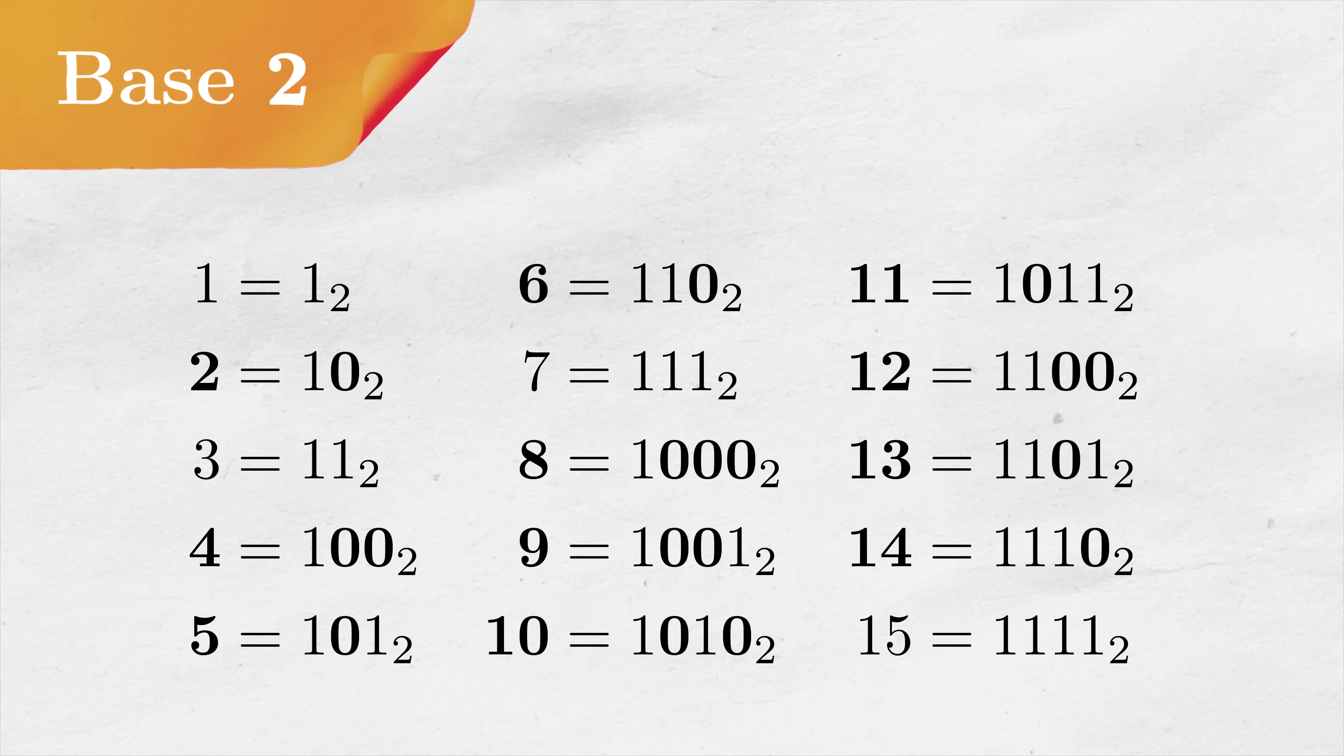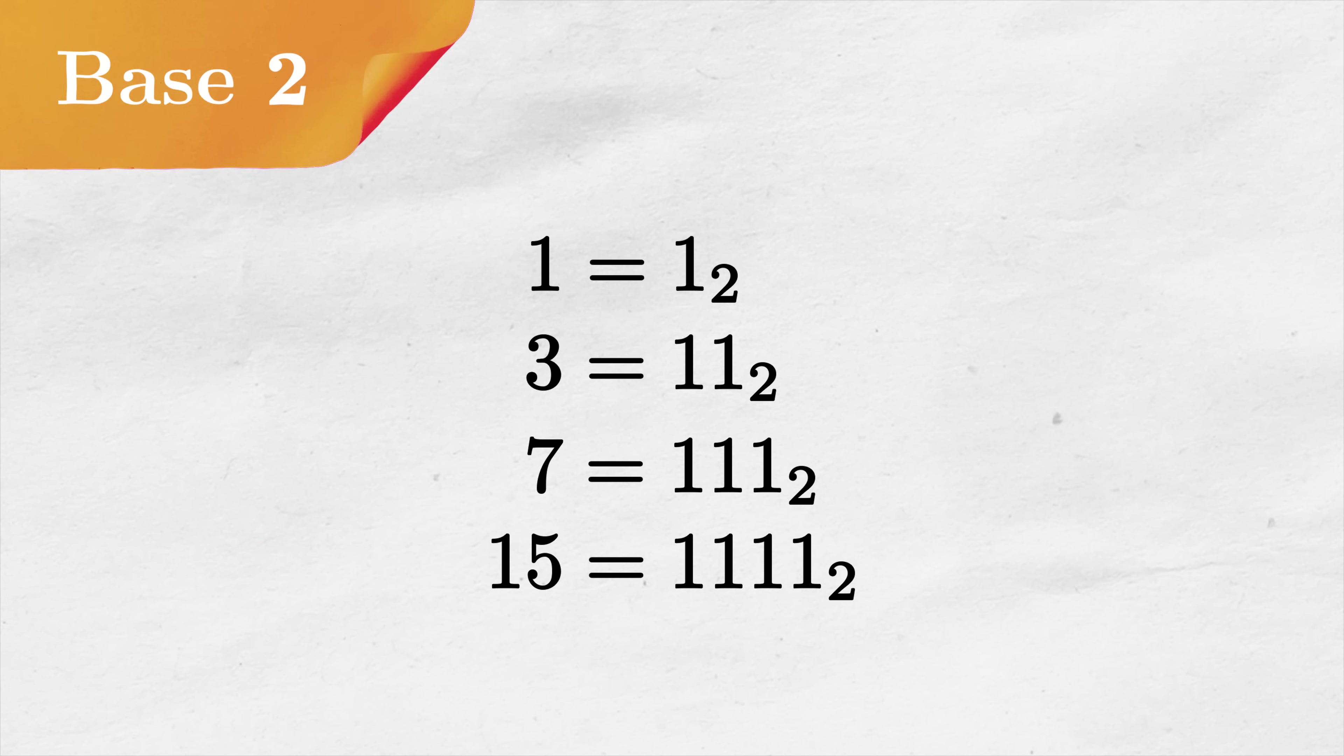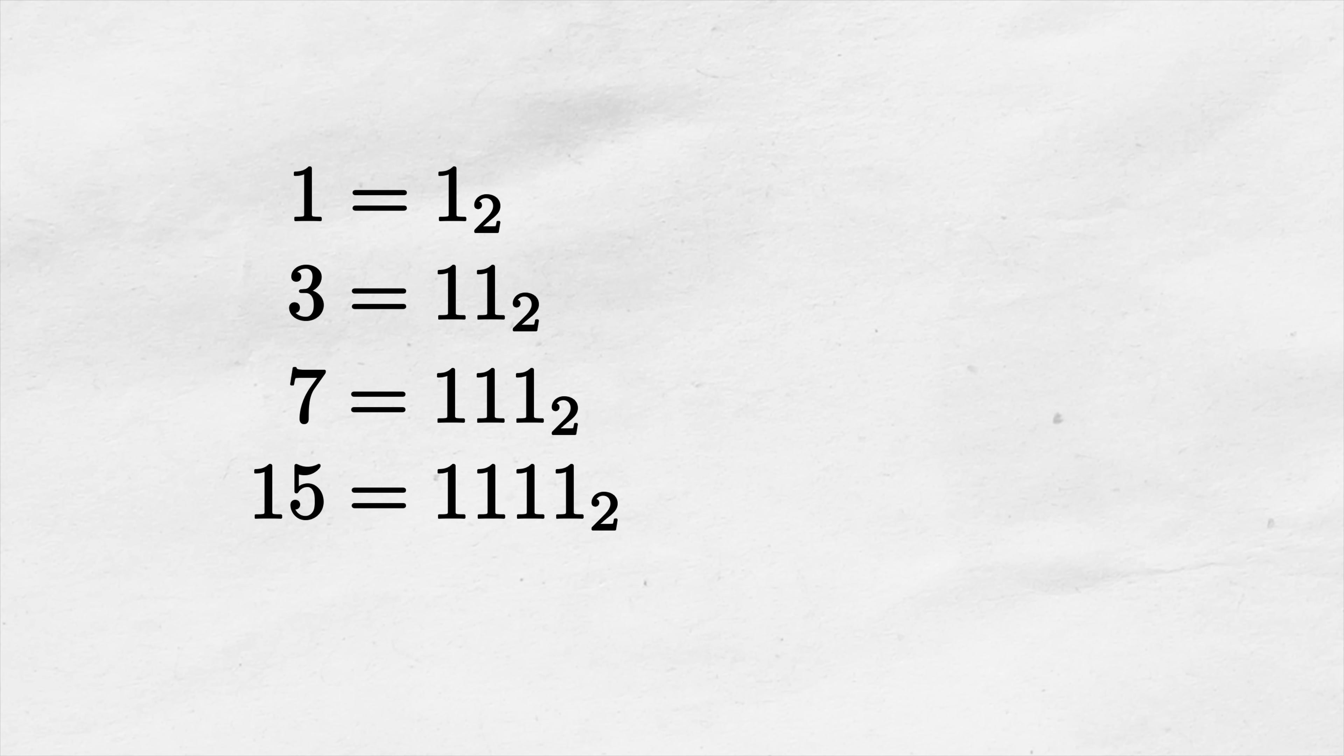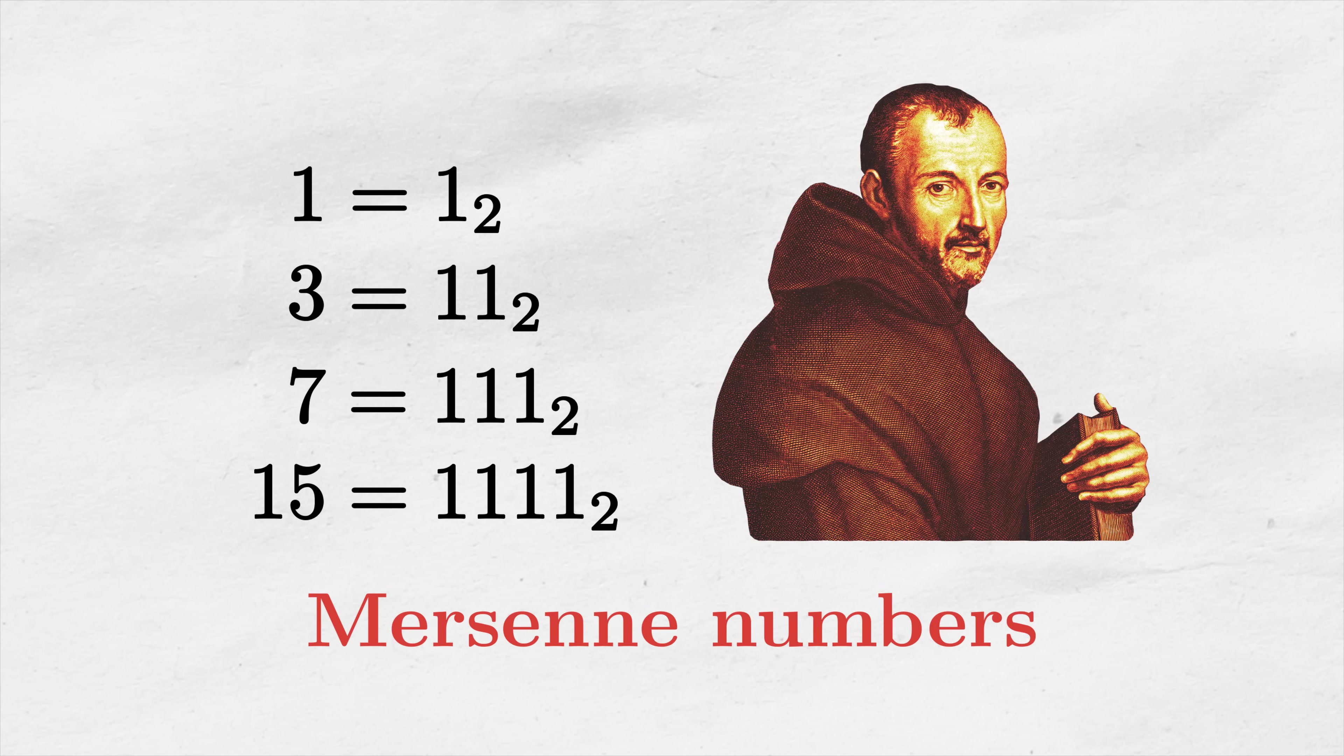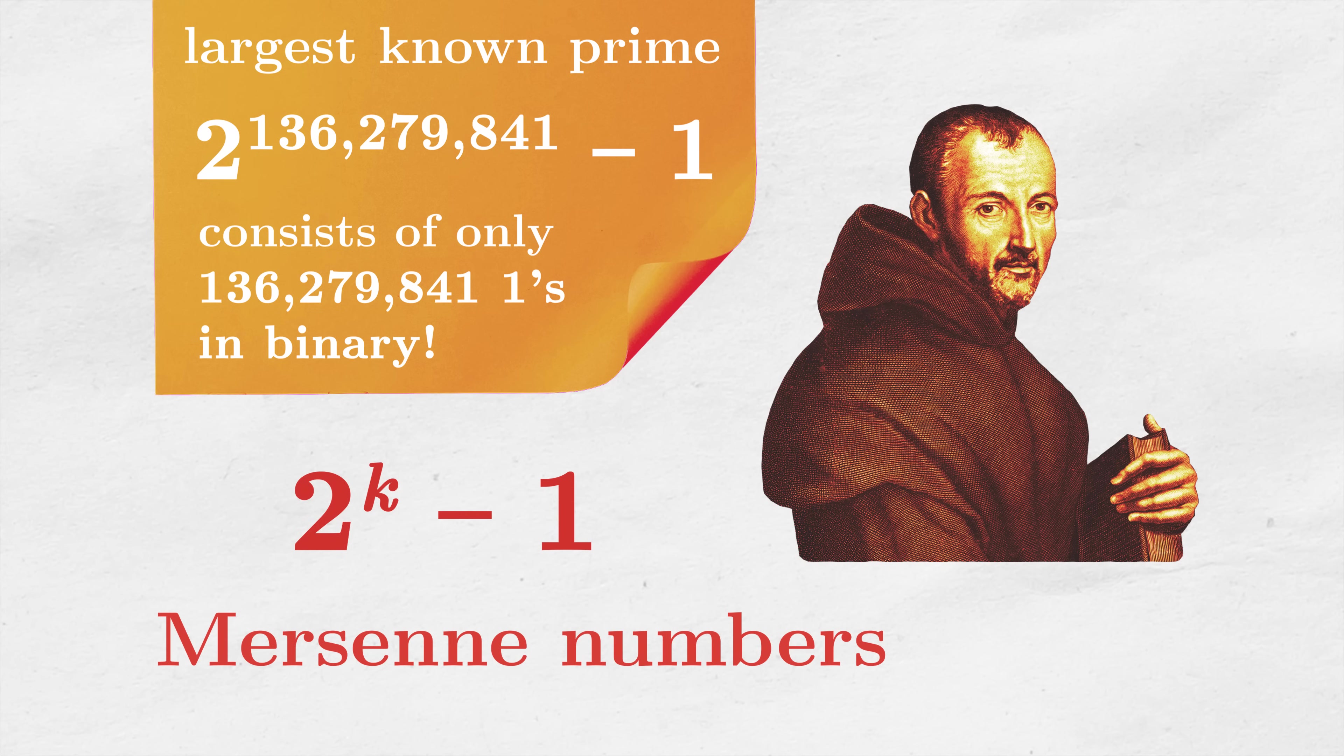The second observation is about the base 2. If you look at binary representations of next numbers, it's fairly easy to notice that almost all of them contain some zero. In fact, the only numbers that do not contain any zero are the ones that consist of ones only. These are very special numbers called Mersenne numbers, which you can recognize as the ones that produce the largest known primes. It's crazy that they pop in the seemingly unrelated based duck theorem.